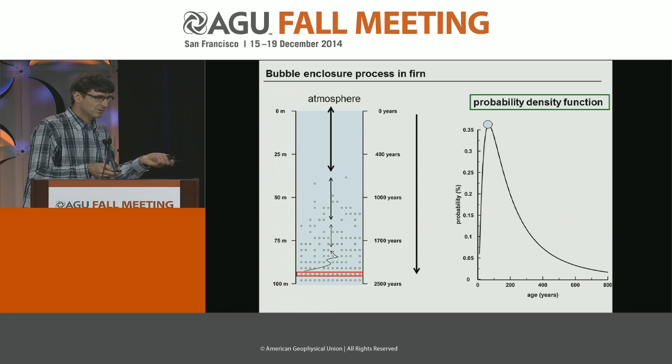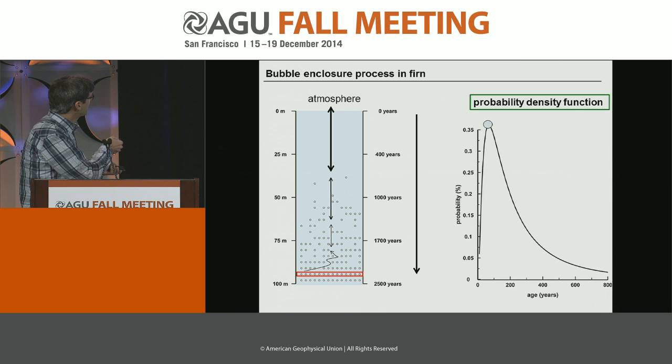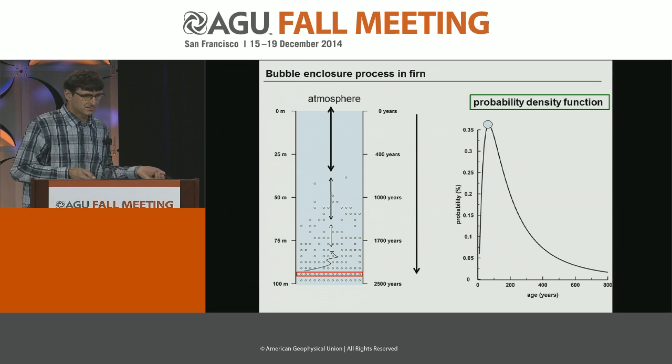You can imagine that if you have an ice core site where you have more snowfall, then processes are faster and you get a much narrower age distribution, which is very useful to derive high-resolution records.